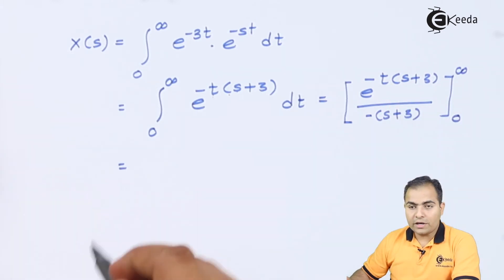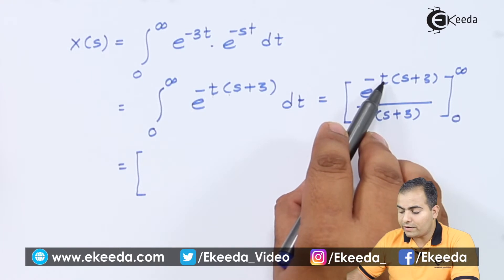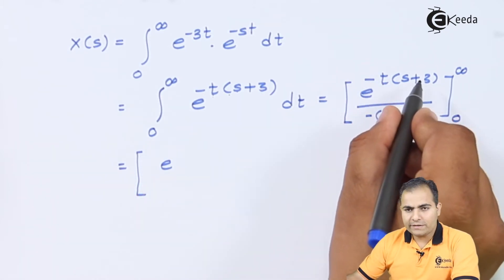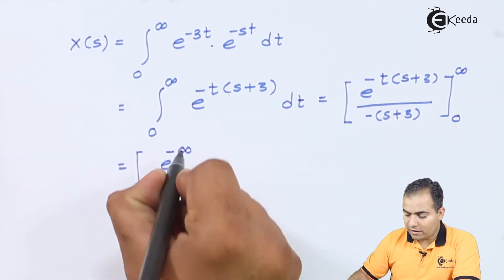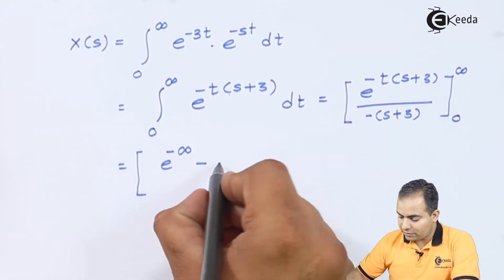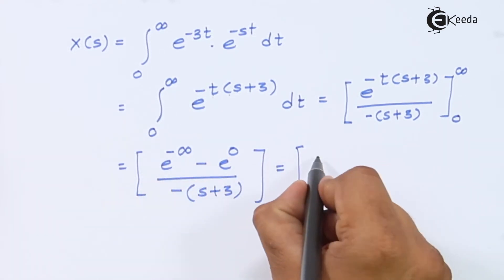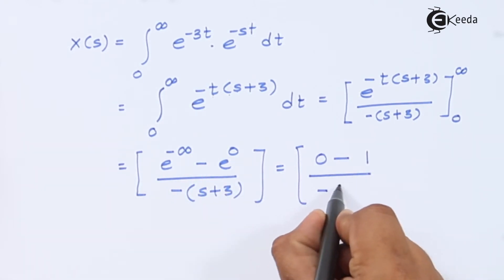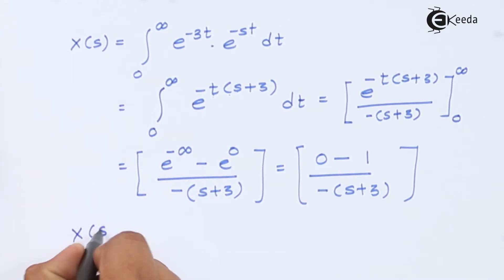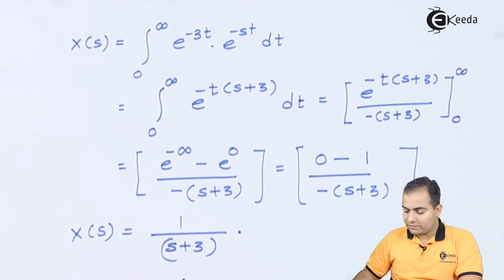We apply the limits from zero to infinity. Substituting the upper limit, t = infinity: infinity times (s+3) is infinity, so e^(-infinity) = 0. Substituting the lower limit, t = 0: zero times anything is zero, so we get 0 / [-(s+3)]. Since e^(-infinity) = 0 and e^0 = 1, the result simplifies. Opening the bracket, the minus signs cancel, giving X(s) = 1/(s+3).